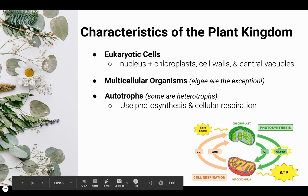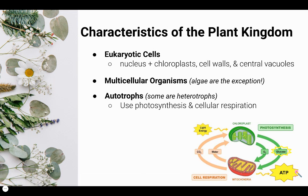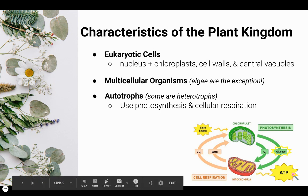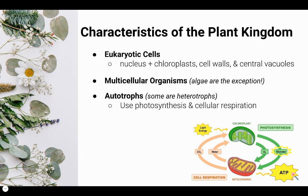Mitochondria releases three products: water, CO2, and ATP. ATP is the energy the plant needs in order to live, thrive, and grow.